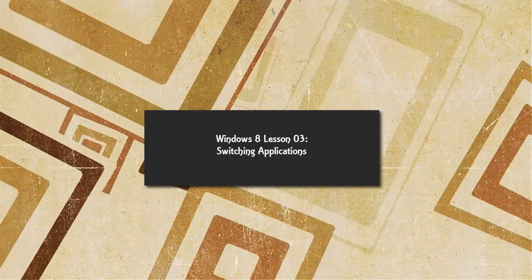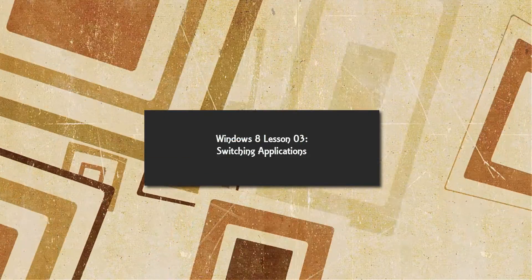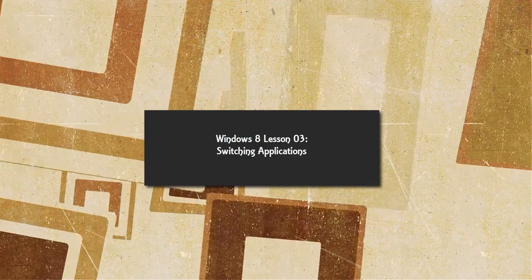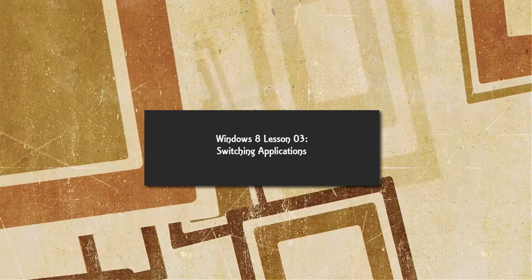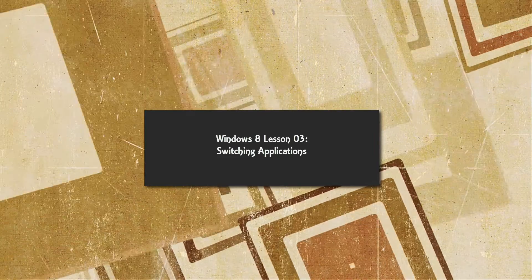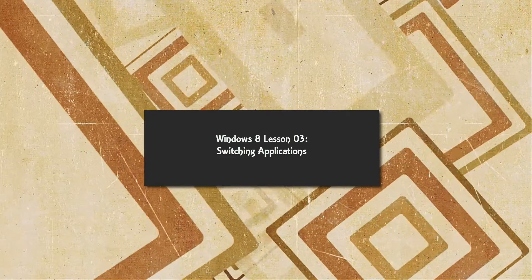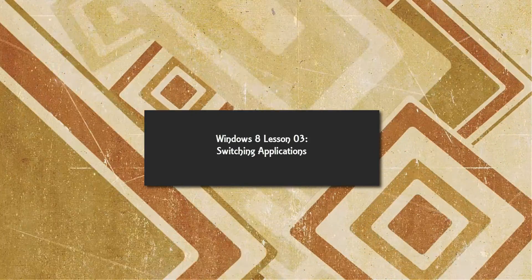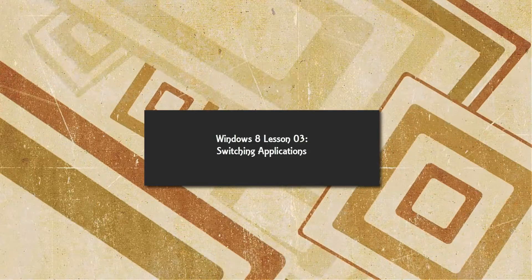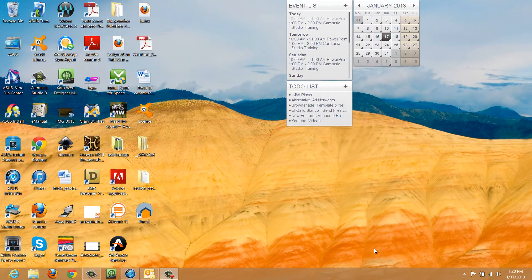Welcome to Windows 8 tutorial lesson number 3. In this tutorial, I'm going to show you how to switch between your applications when you're in the Metro interface view and also when you're in the desktop view. I'm going to show you which methods I feel are the best depending on which interface you're in at that given point in time. So let's go ahead and get started.